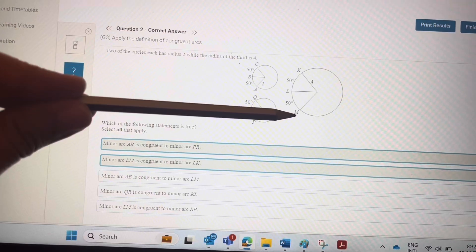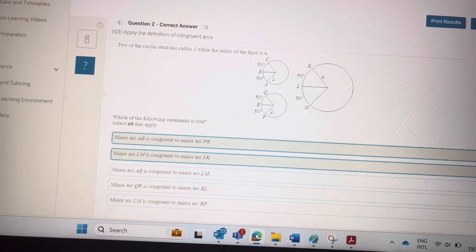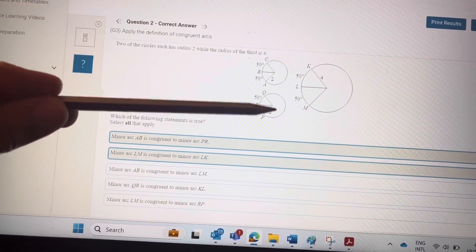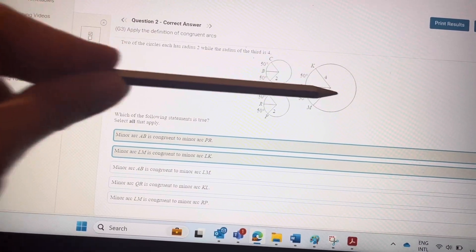And here these two are congruent because it's giving, right? This is 50 and this is 50. And of course, this and this are congruent, and this and this are congruent. These two circles are congruent because they have the same radius. This one doesn't have a relation with this or with this.